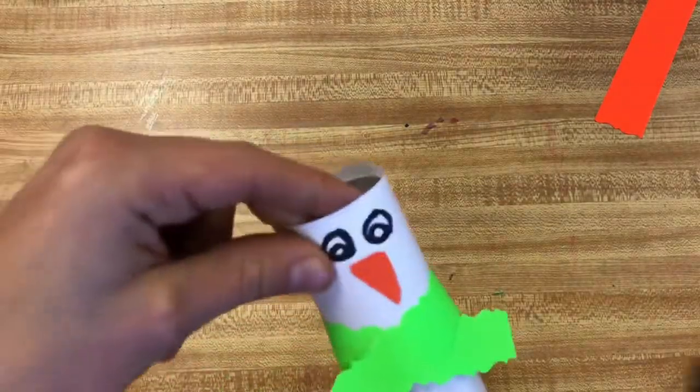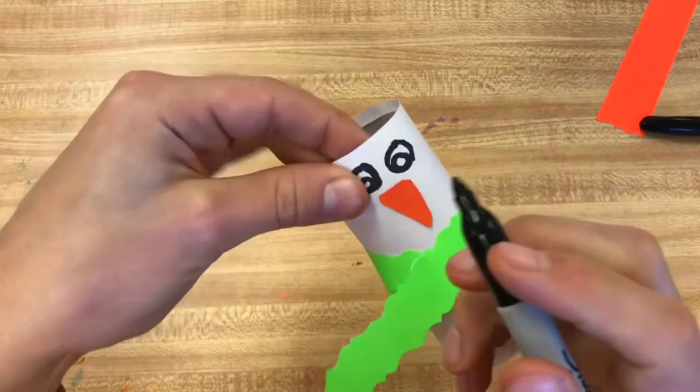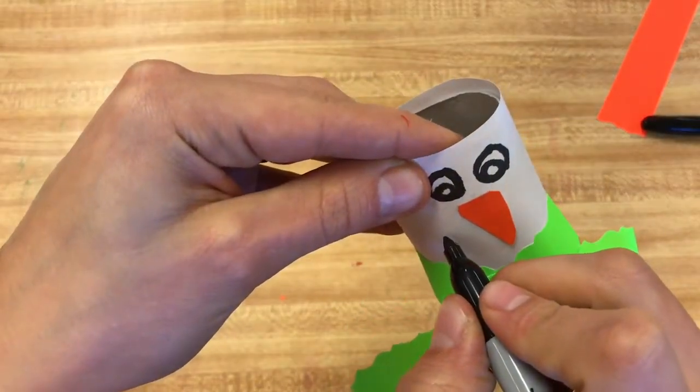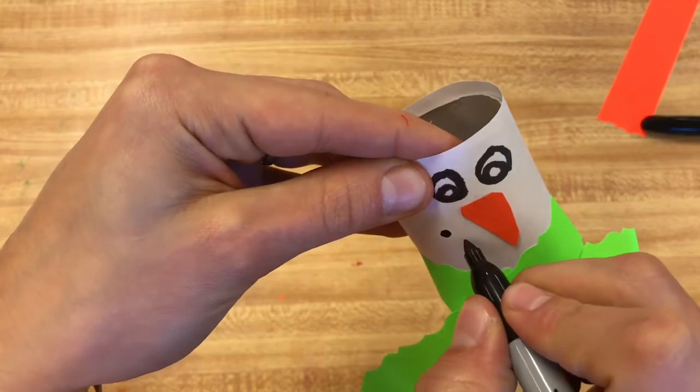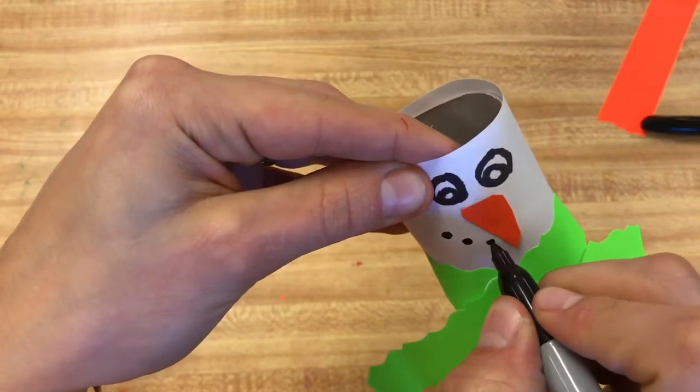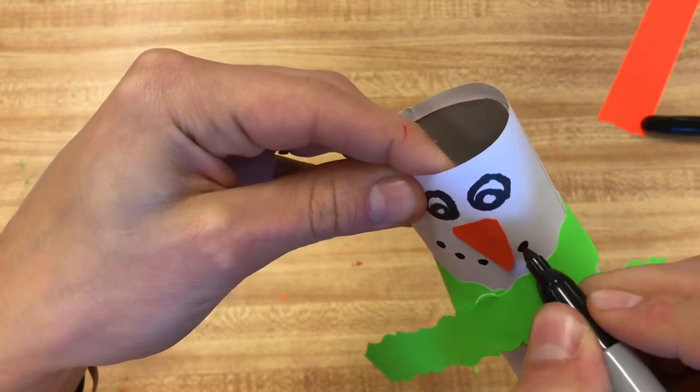Alright, so there's my nose. Now I can start adding some of those little features for the mouth. I'm gonna add, let's see, I think I can do three dots on each. So I can do one, two, three, one, two, three.